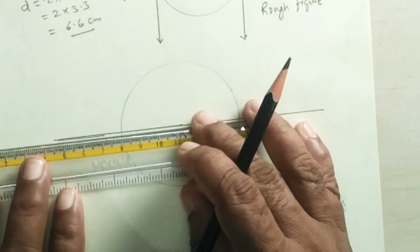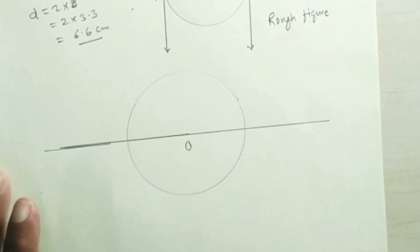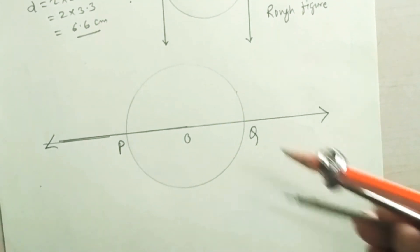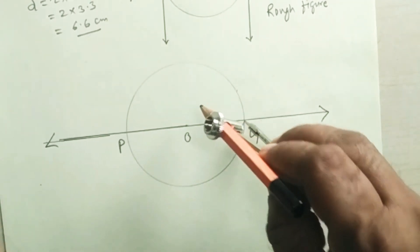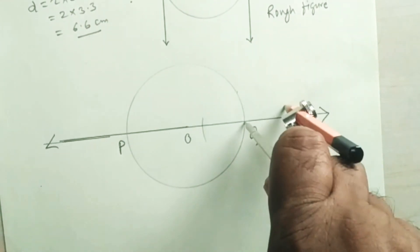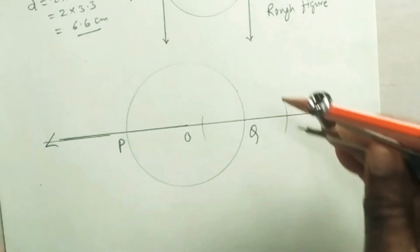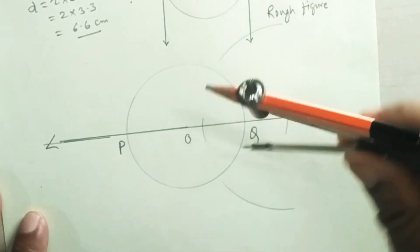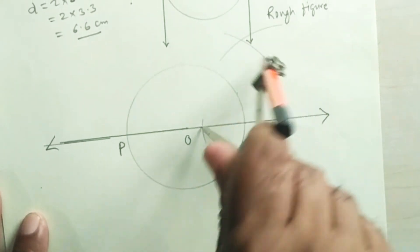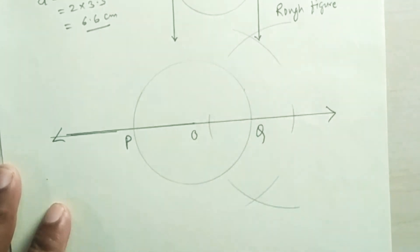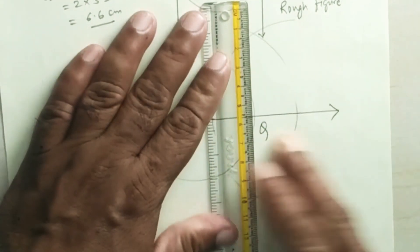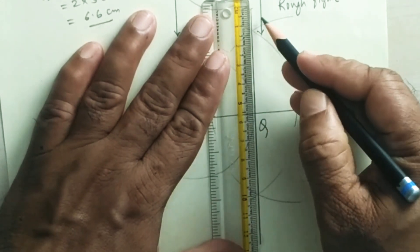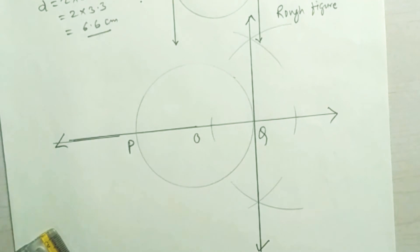Take the distance in the compass equal to 3.3 centimeters and draw the circle with center O. Draw the chord — its length is 6.6 centimeters, which is the diameter passing through center O. Extend it on both sides to get points P and Q. Keep the pointer at Q, draw one arc on the left-hand side and one arc on the right-hand side of line PQ. Take more than half the length between these arcs and draw one arc above and one below. From the other arc cutting the line, cut the arc above and below, then draw the tangent passing through point Q.